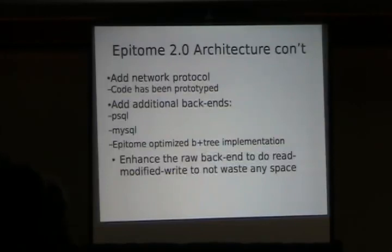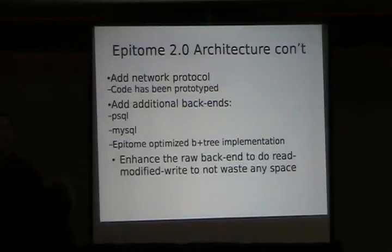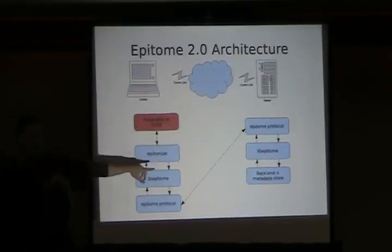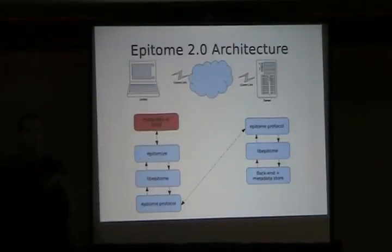The metadata itself is not stored with the chunks. In Epitome 1.0 the metadata is returned to the user, so you're responsible for keeping it. In 2.0 I want to be able to actually save the metadata in the backend as well, so that you have a single UUID that will retrieve a whole backup. And at that point you're effectively enabling the whole CAS thing.